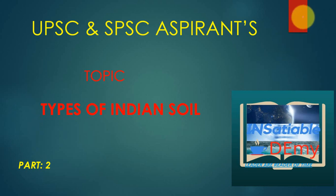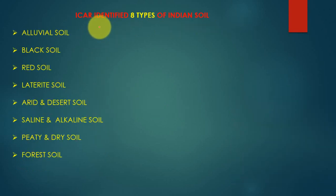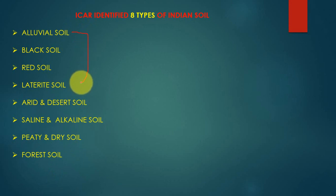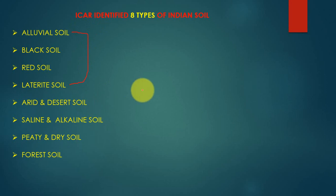Hello everyone. In this video we are going to learn about types of Indian soil. In our previous video we learned about soil formation and the factors that help in soil formation. This video covers types of Indian soil, Part 2. ICAR identified 8 types of Indian soil: alluvial soil, black soil, red soil, laterite soil, arid and desert soil, saline and alkaline soil, peaty and marshy soil, and forest soil.